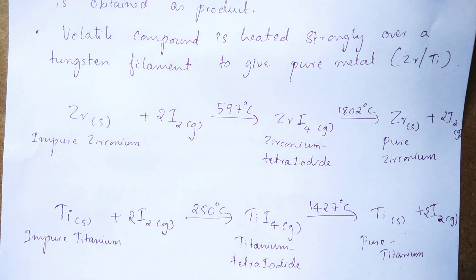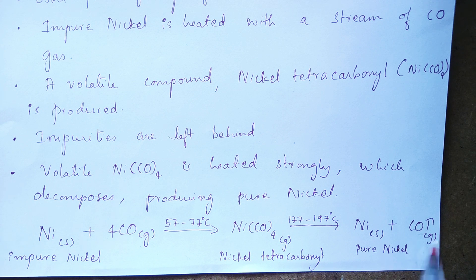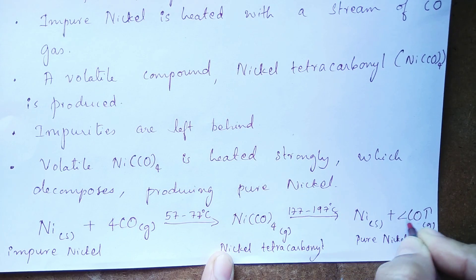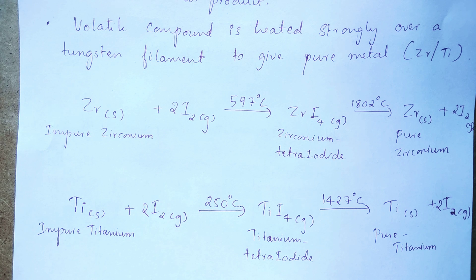I forgot to balance the equation in Mond's process. When nickel tetracarbonyl undergoes decomposition, we get nickel solid and four carbon monoxide molecules — so put 4 in front of CO. Now it is balanced. I hope you understood the concept of vapor phase refining clearly. Thank you so much for watching.